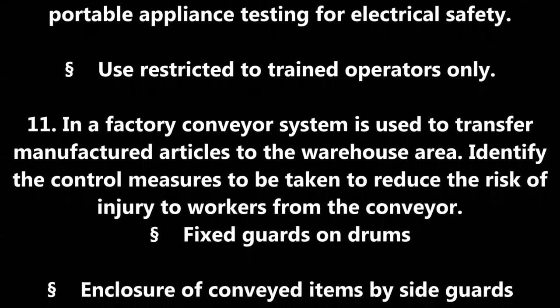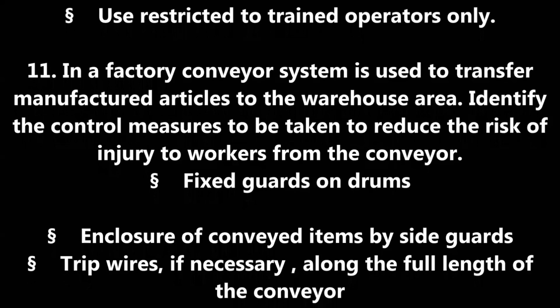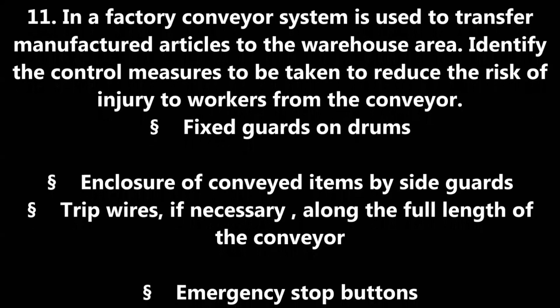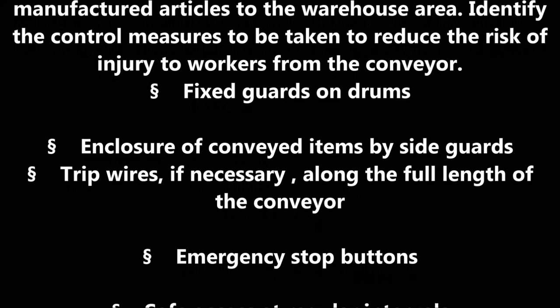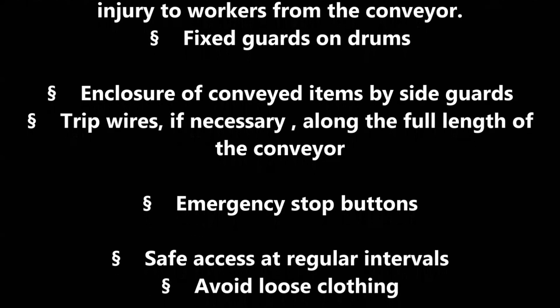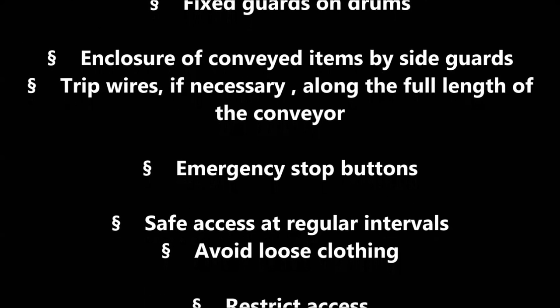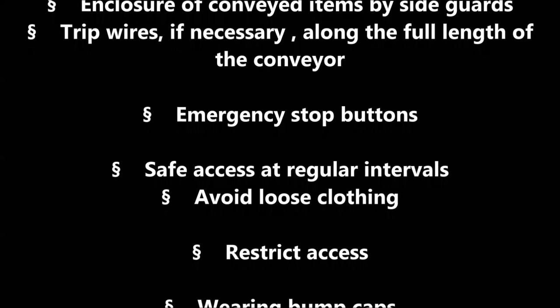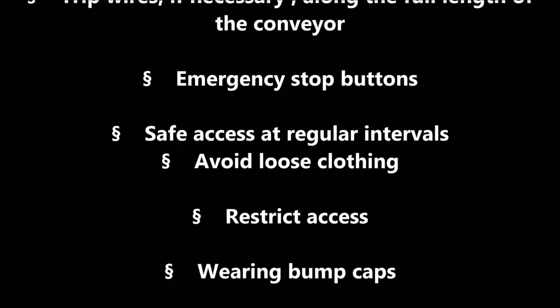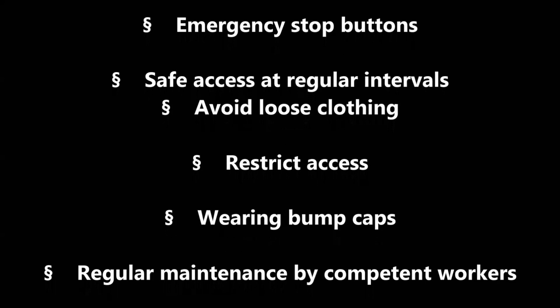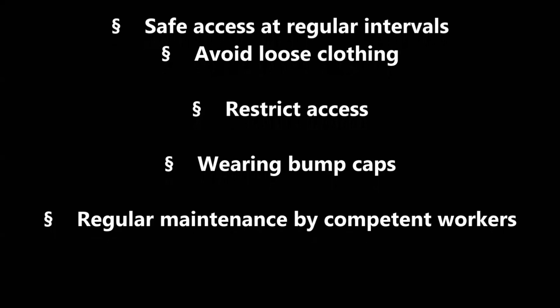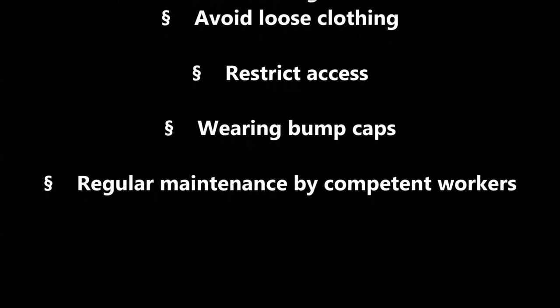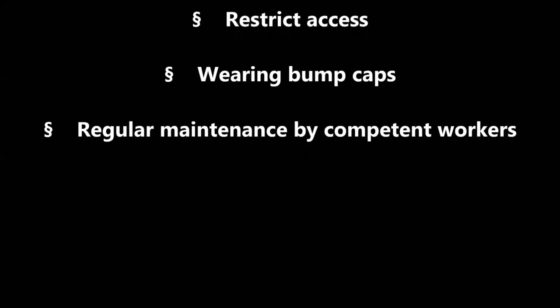In a factory, a conveyor system is used to transfer manufactured articles to the warehouse area. Identify the control measures to be taken to reduce the risk of injury to workers from the conveyor. Fixed guards on drums. Enclosure of conveyed items by side guards. Trip wires, if necessary, along the full length of the conveyor. Emergency stop buttons. Safe access at regular intervals. Avoid loose clothing. Restrict access. Wearing bump caps. Regular maintenance by competent workers.